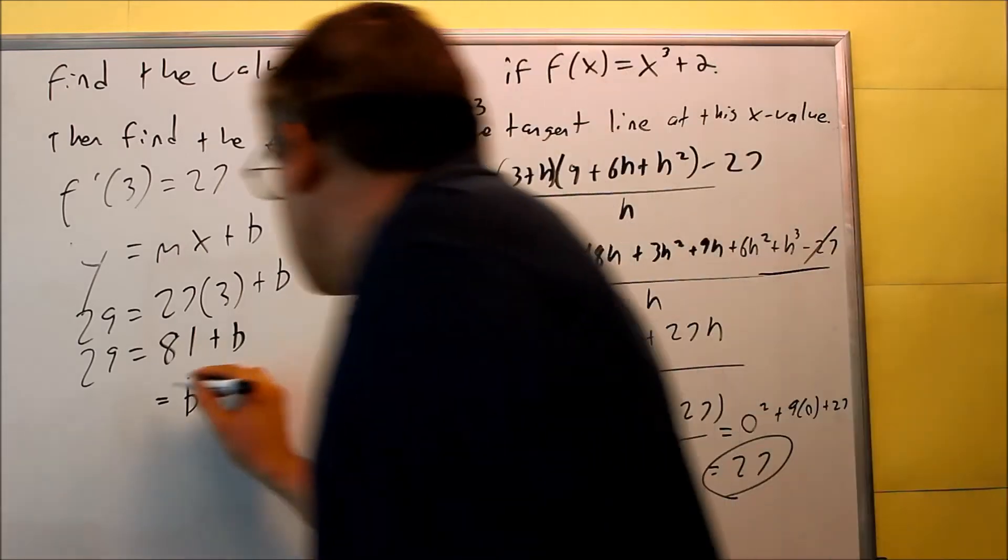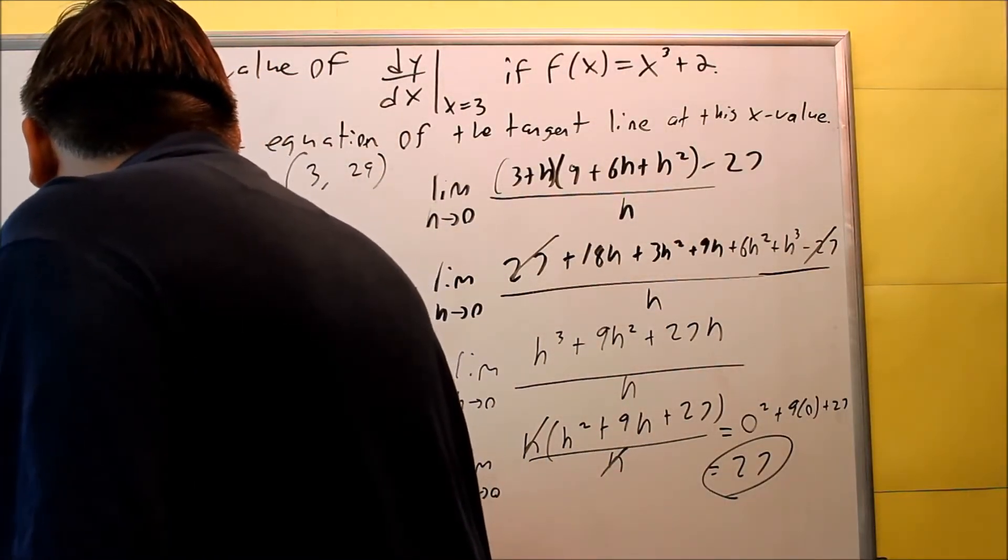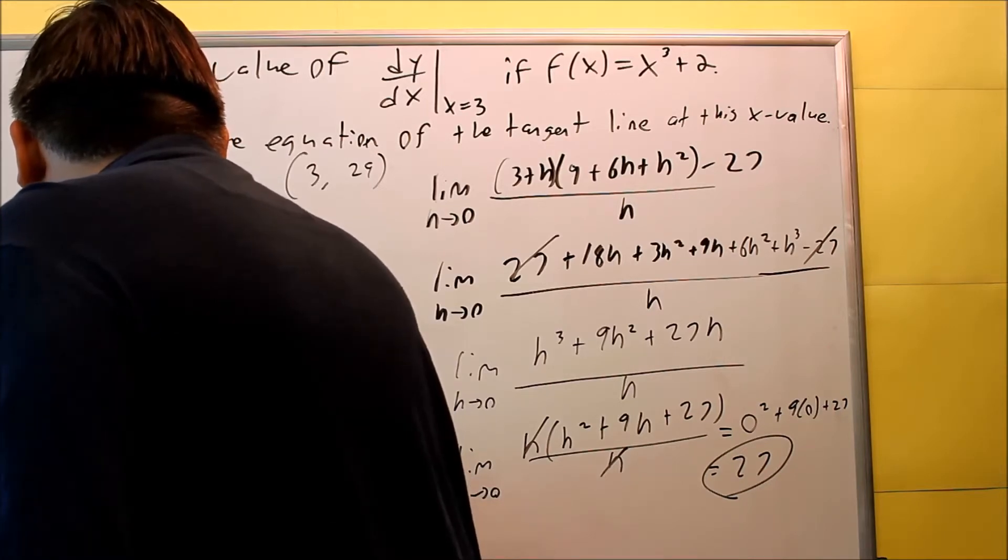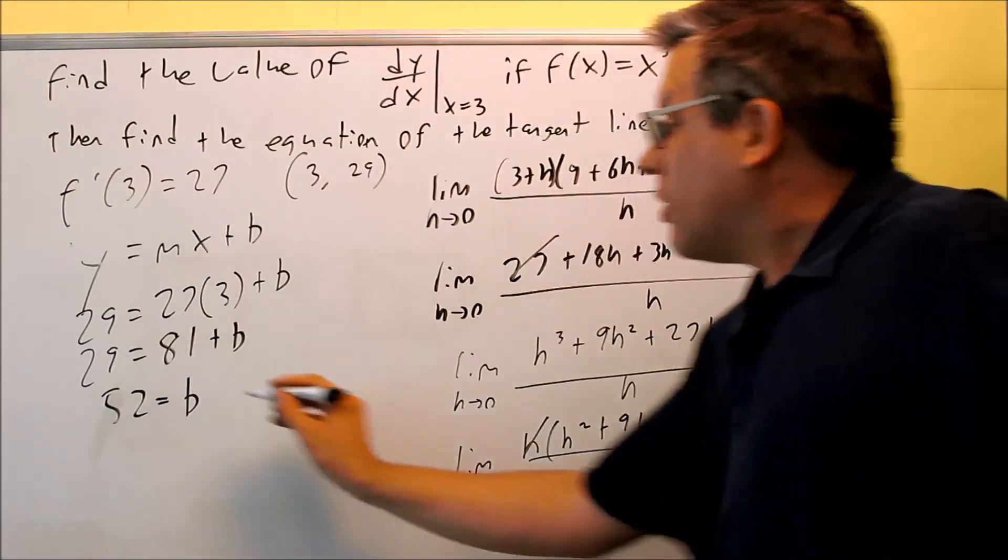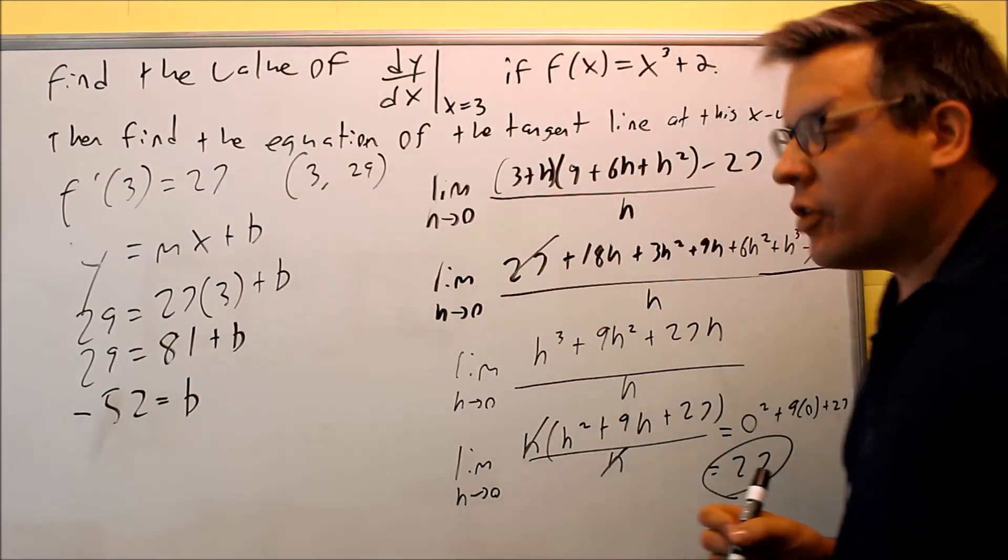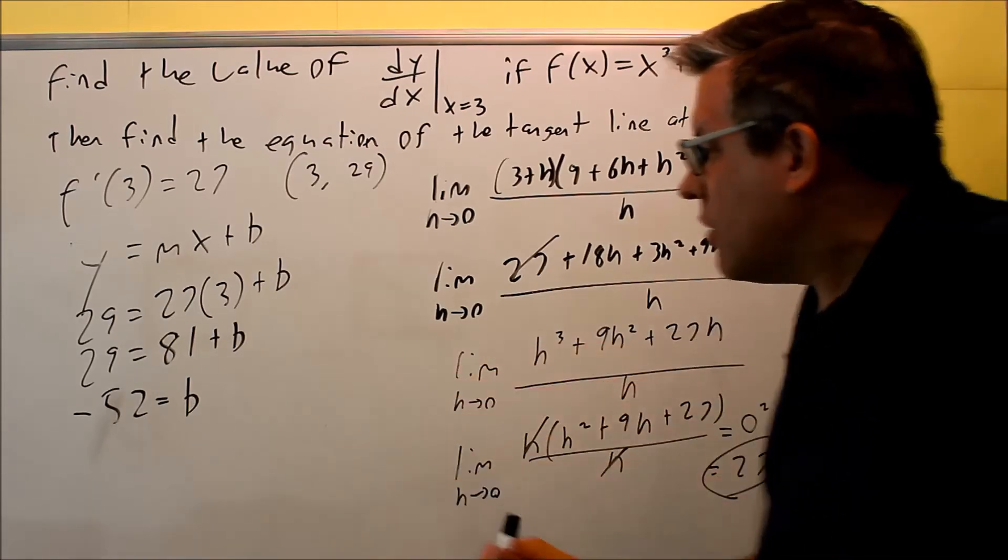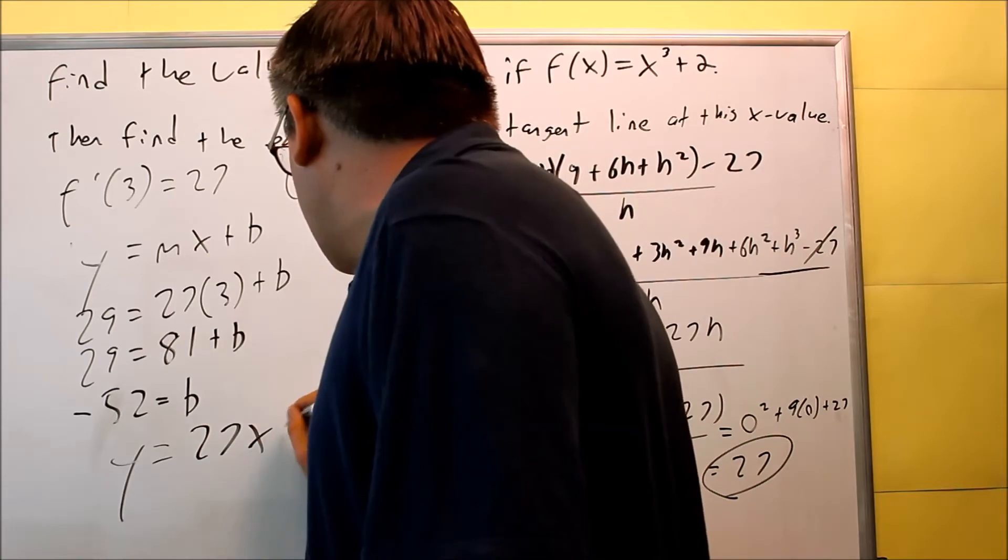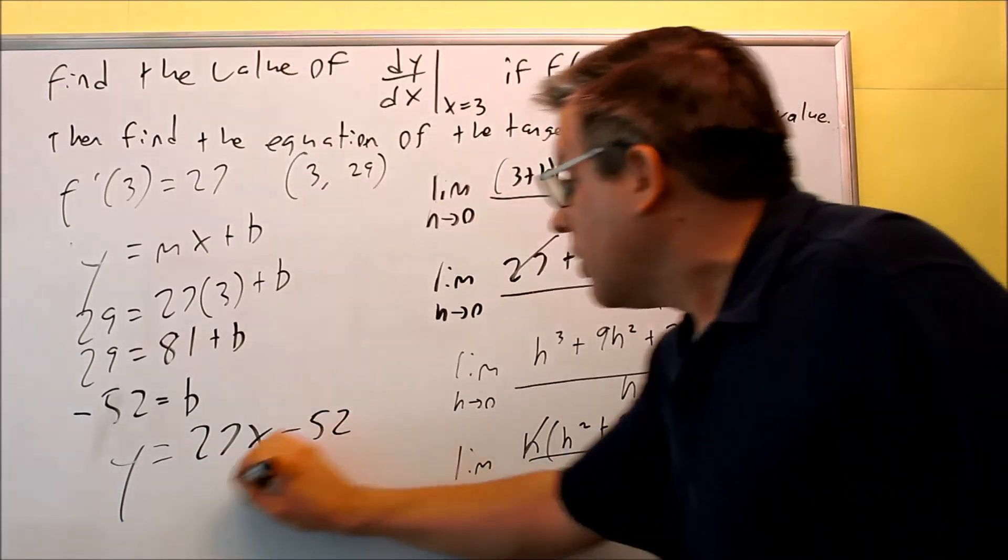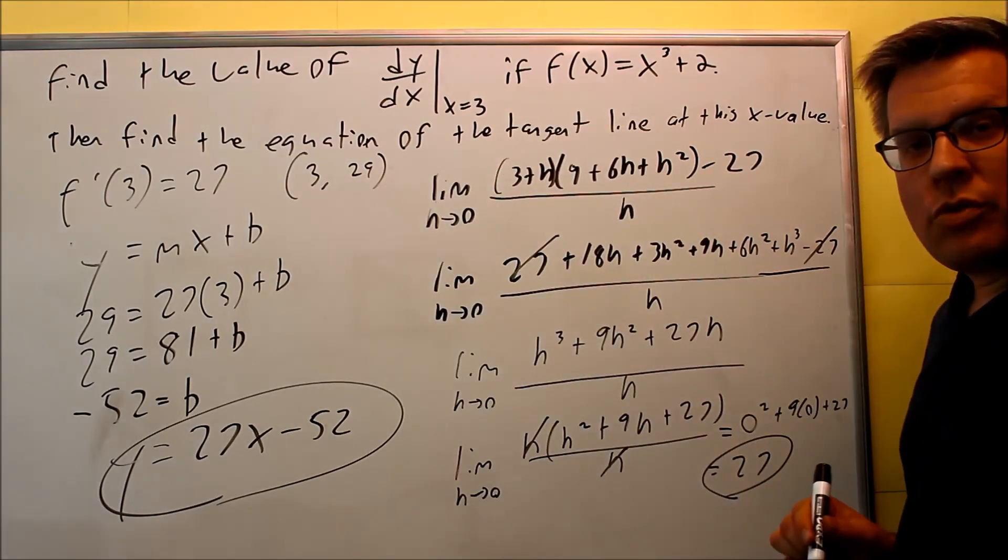And when we do, we're going to get negative 52, make sure I subtracted that correctly. Negative 52 we'll get for the answer when we subtract those. And so then that's our answer for b, so our final answer is y equals 27x minus 52. That would be the equation of the tangent line at the value of x equals 3.